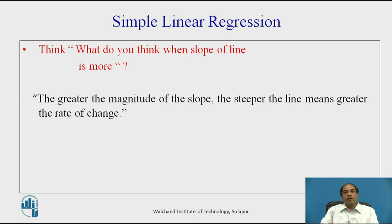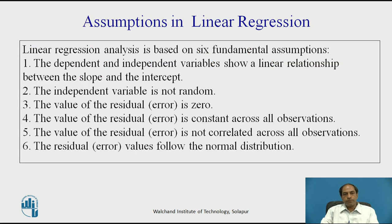Some basic assumptions in linear regression: first, the dependent and independent variables show a linear relationship between slope and intercept — they follow linearity, and we are not studying non-linear relations here. Second, the dependent variable is not randomized. Third, the value of the residual is zero. Fourth, the residual is constant across all observations. Fifth, residuals are not correlated across observations. Sixth, residual values follow a normal distribution curve, allowing all normal distribution statistics to be applied.